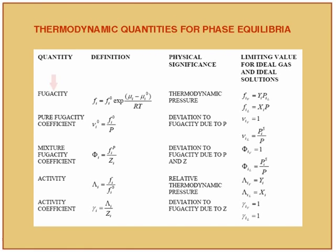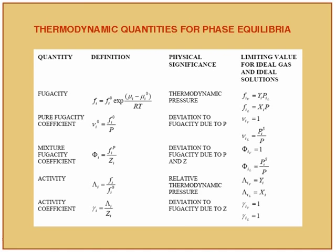The pure fugacity coefficient is normalized with respect to the system pressure — if fugacity equals pressure, the coefficient is 1; otherwise it measures the deviation due to change in pressure. For mixtures, the fugacity coefficient involves dividing by the composition — y for vapor phase, x for liquid phase. From here we derive the activity, which is the ratio of the fugacity of the ith component in the mixture divided by the standard state fugacity — a relative thermodynamic pressure. Then you have the activity coefficient.